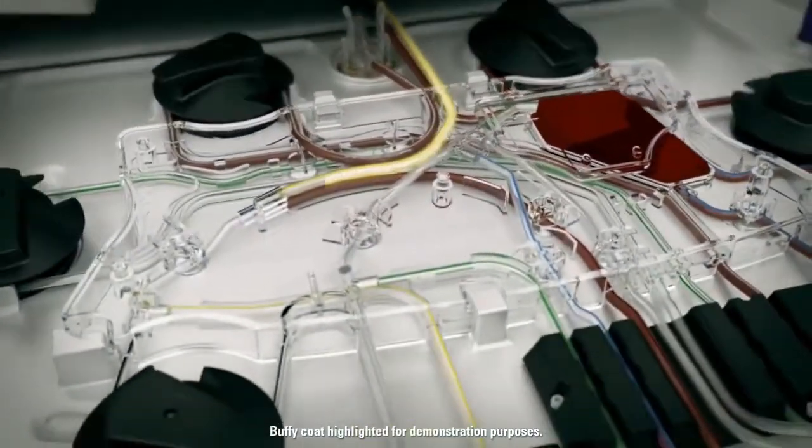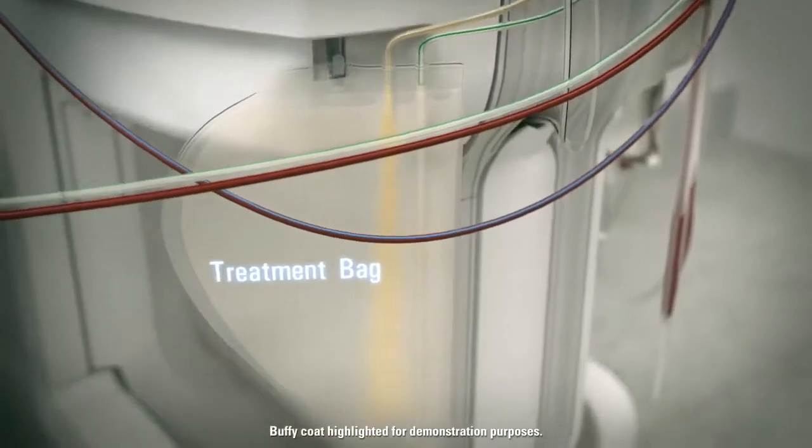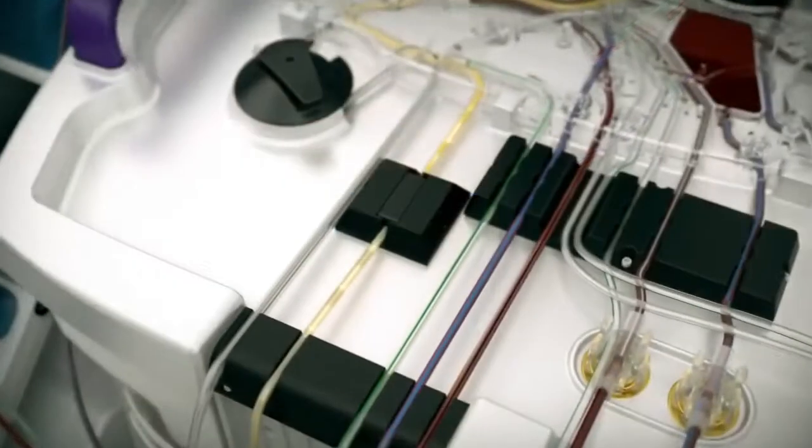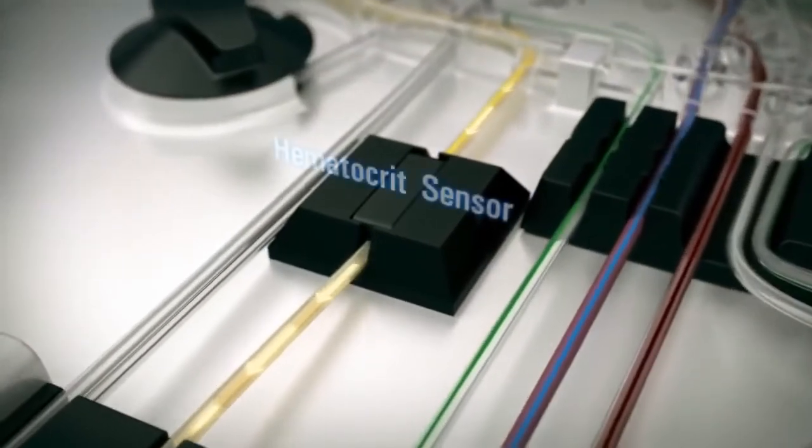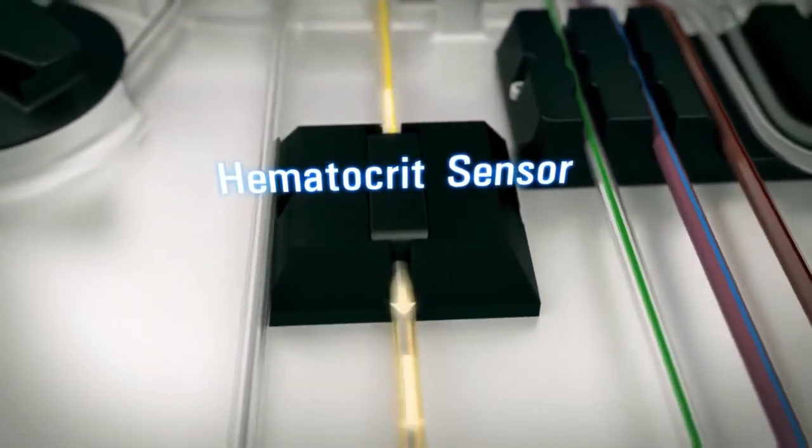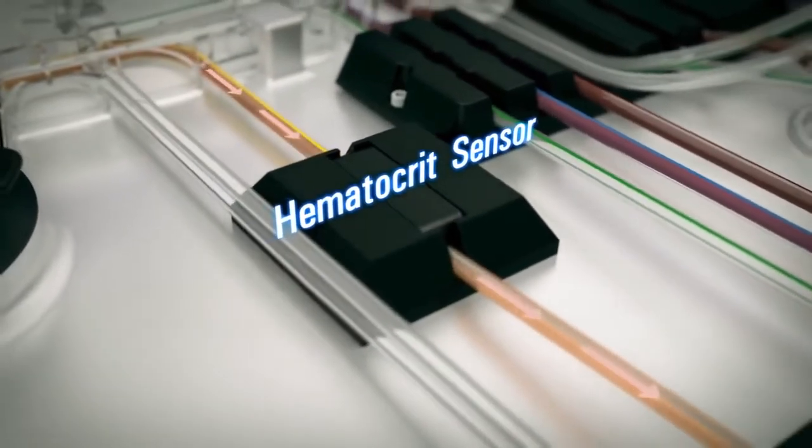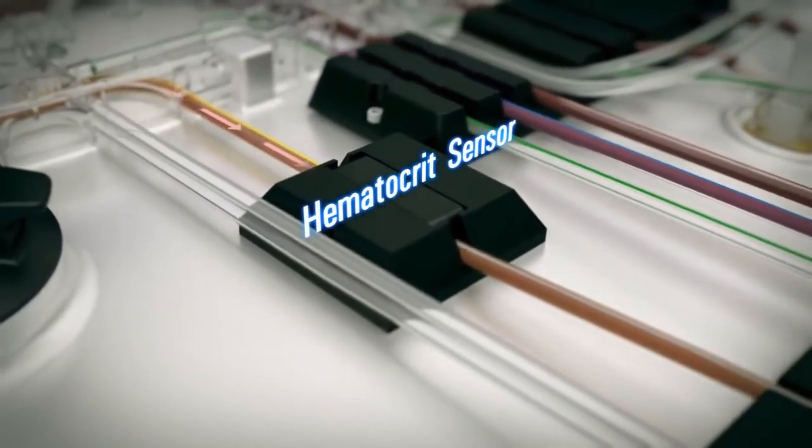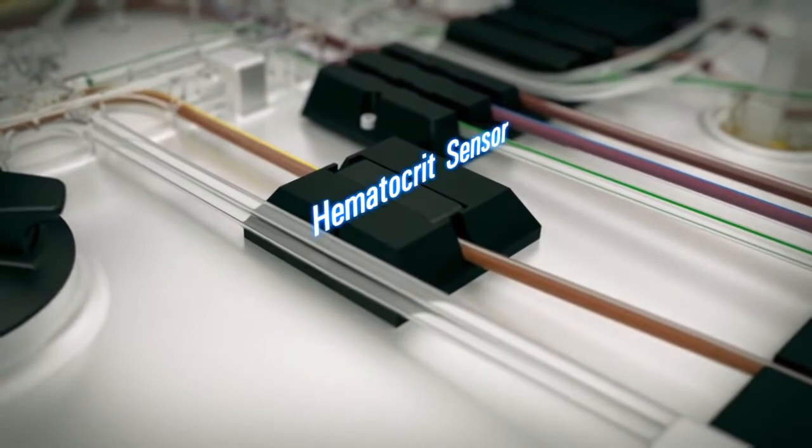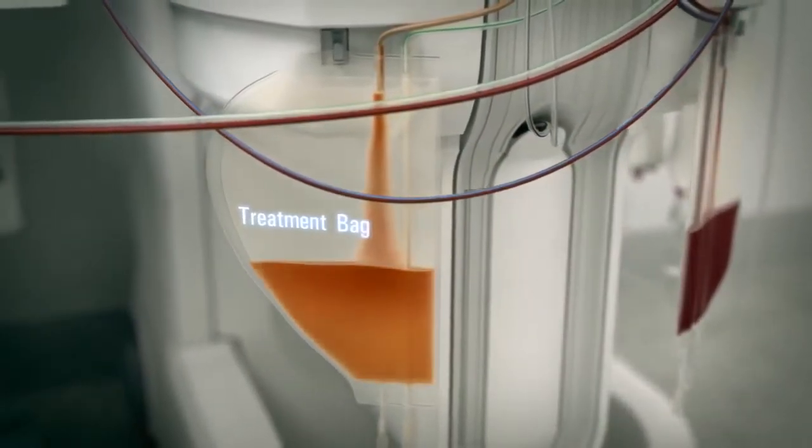The harvested buffy coat is transferred to the treatment bag. As the harvested buffy coat is transferred, it passes along the Celex system instrument deck through the hematocrit sensor which is able to detect the red blood cell concentration. Once the appropriate concentration of RBCs is detected, the tube is occluded and the removal of cells from the centrifuge stops in order to prevent additional RBCs from entering the treatment bag.